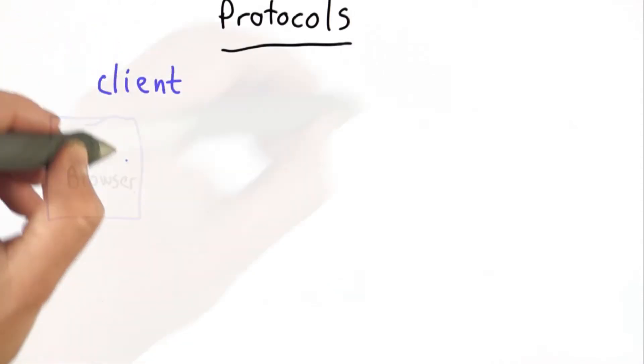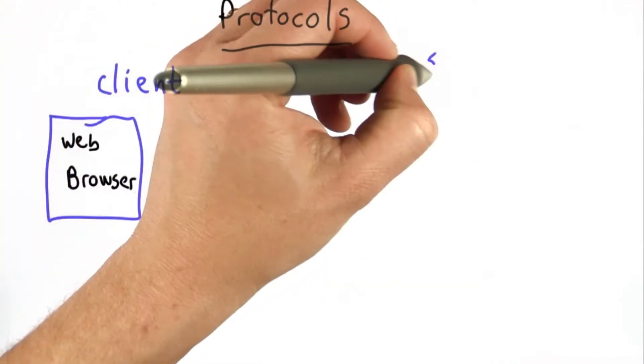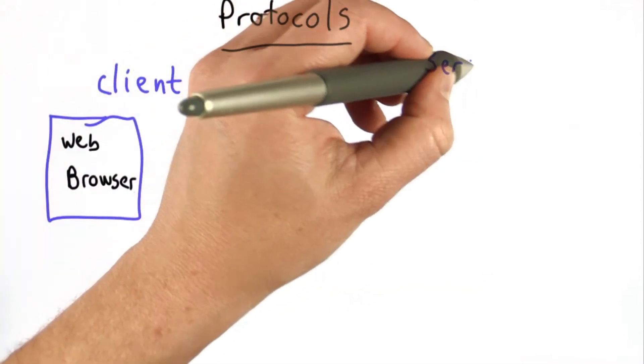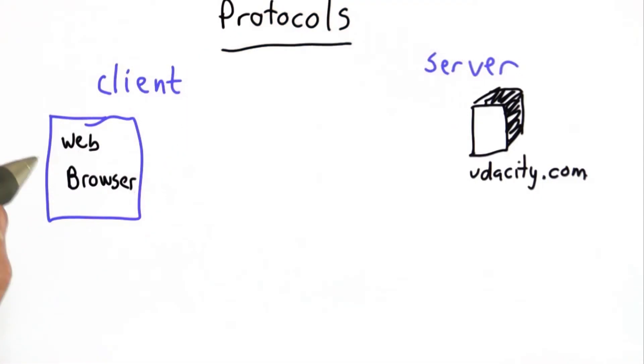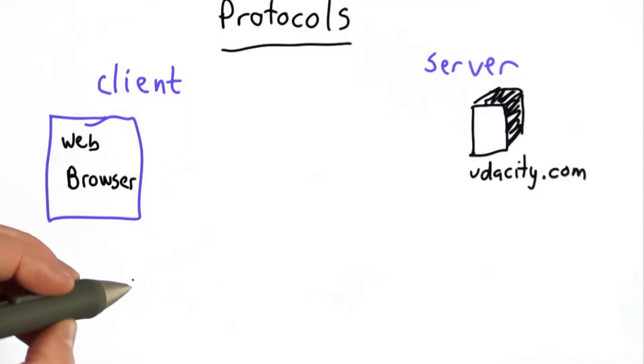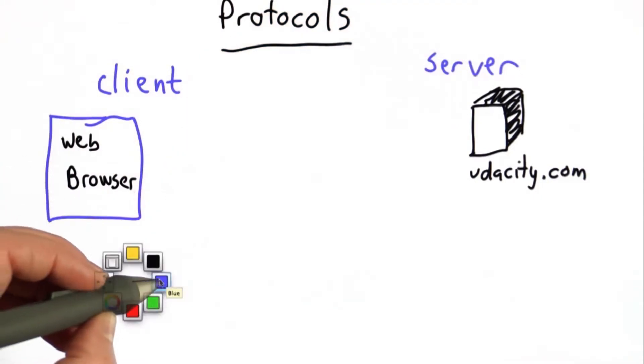The client is the web browser, and the server is the web server — so that might be udacity.com. The web browser is what you're running at home.